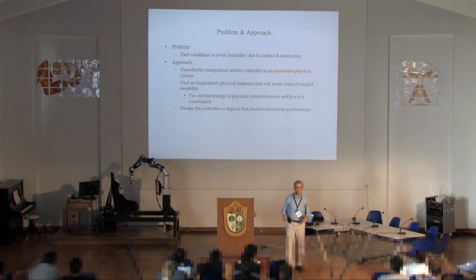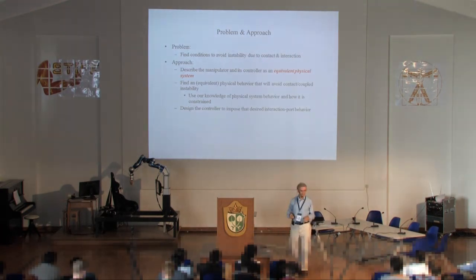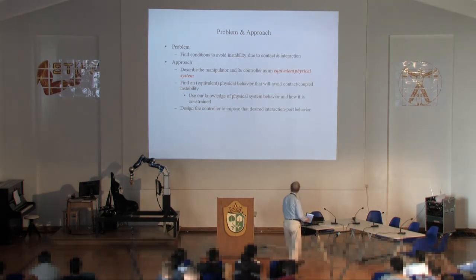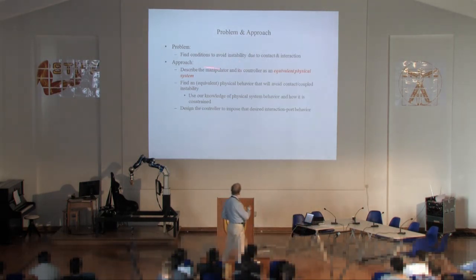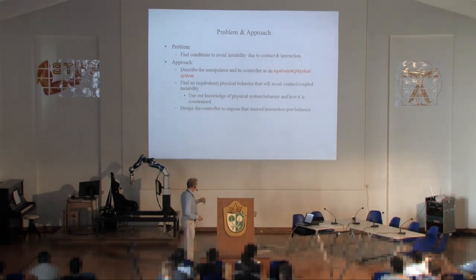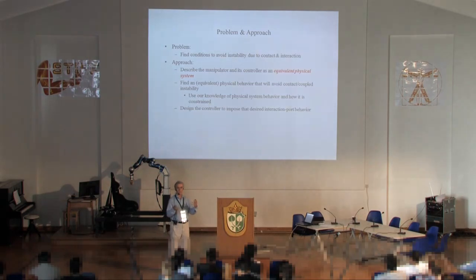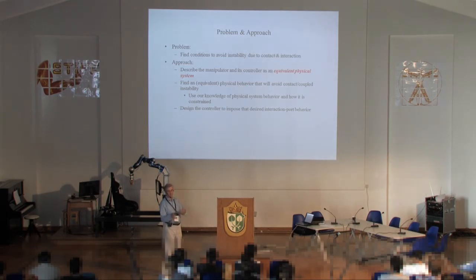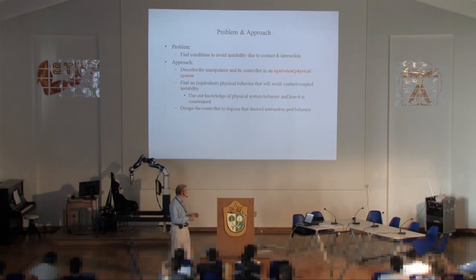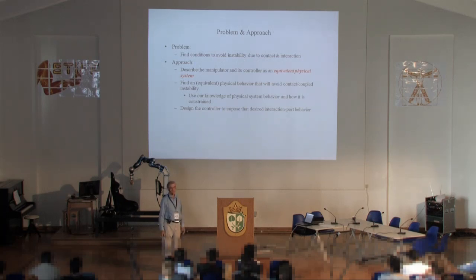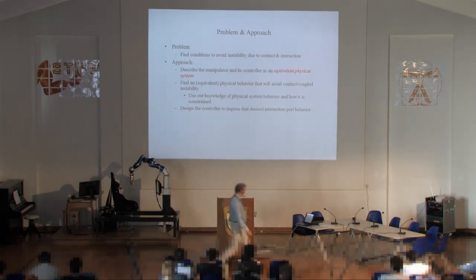The approach I'm advocating is to find conditions to avoid instability due to contact and interaction. The basic idea is: first describe the manipulator and controller as though it were all physical stuff — an equivalent physical system. Then see if you can find an equivalent physical behavior that avoids the problem. We use what we know about physical systems to figure out a physical system that would behave well, then design a controller to impose that interaction port behavior.